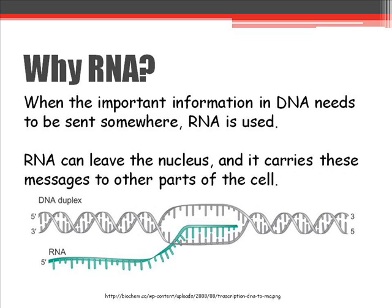When a message needs to be sent somewhere else in the cell, the DNA can be used but it can't be sent. So the information comes from DNA, but RNA will go ahead and make a copy of that information and send it to the other parts of the cell. This picture shows how DNA can unwind a little bit, and then RNA as a single strand will go in and base pair with the DNA in order to make a copy of this information.